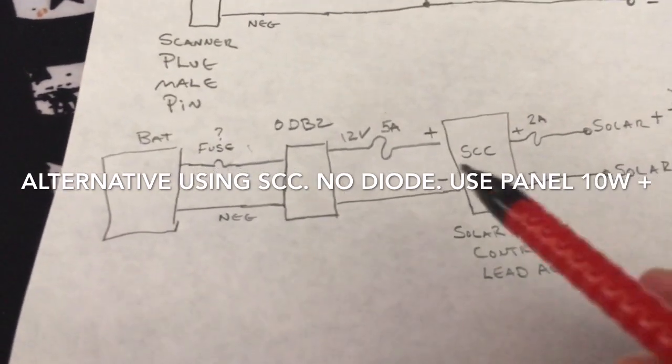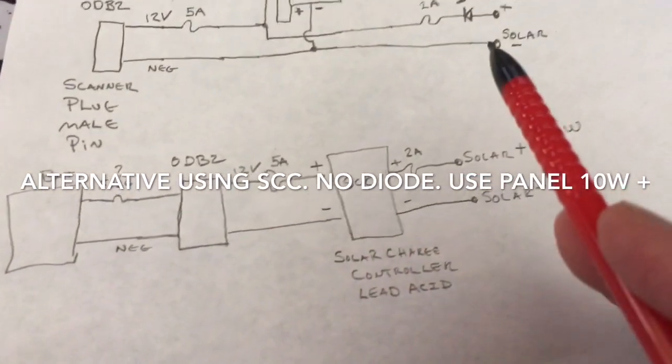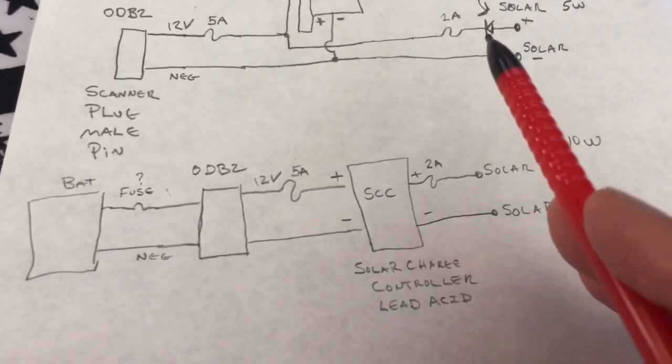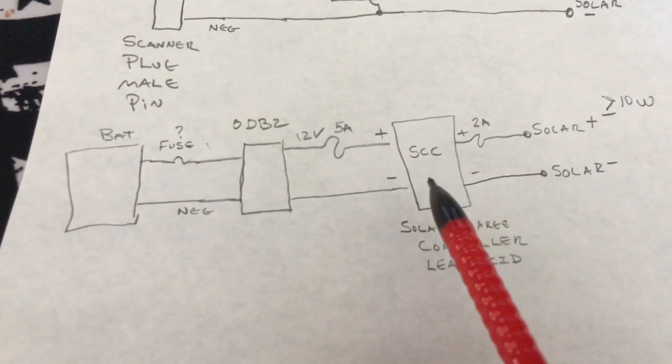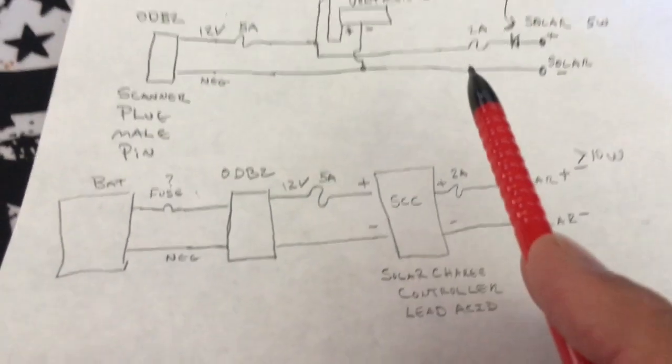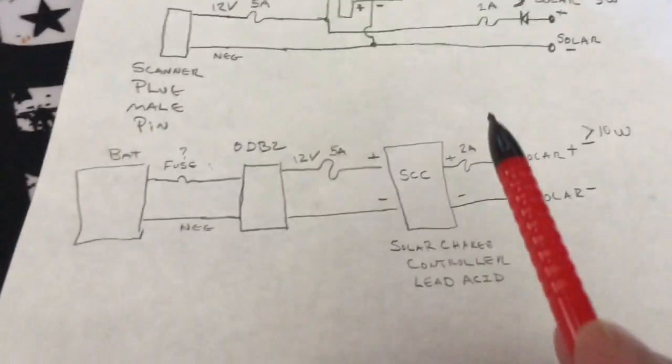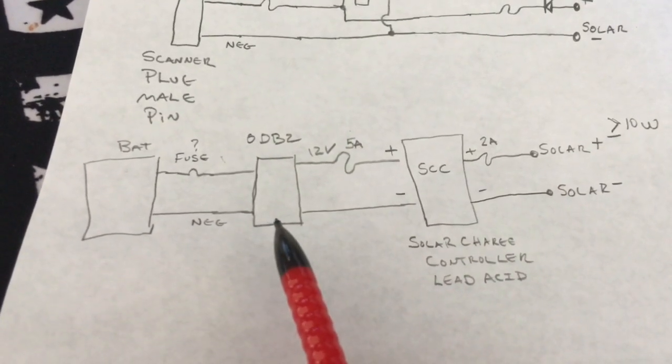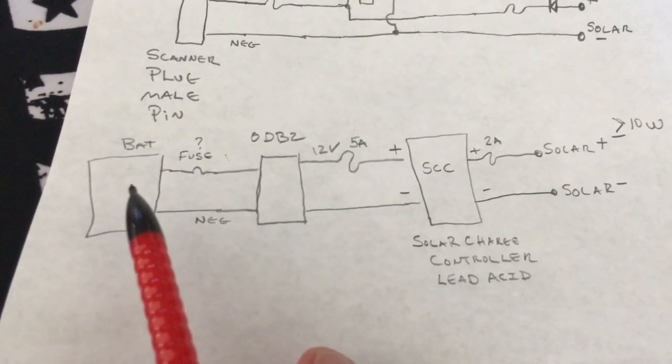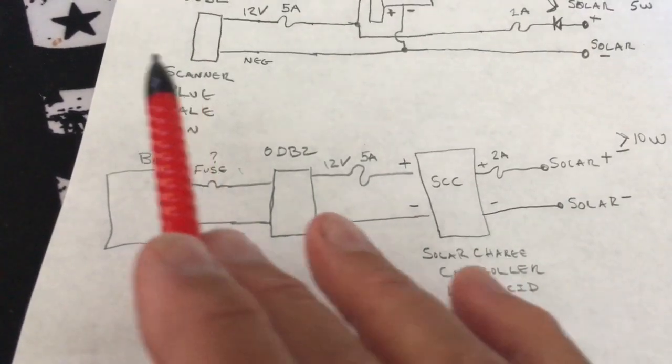Now we'll take a look at the schematic if you decide to put a solar charge controller in instead of just using the diode over here. So it's a replacement. If you use the solar charge controller you don't need this 5819 diode.